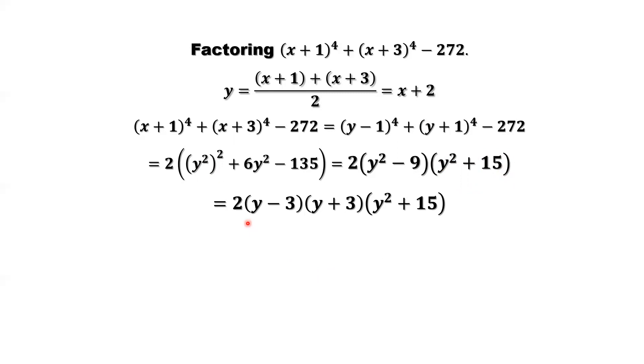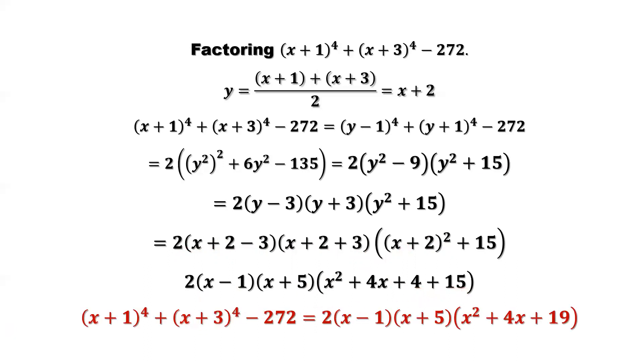So we're here. Looks like we cannot continue to factor this polynomial. So what is y? We know that's x+2. We need to replace y back here in terms of x. So replace y by x+2. x+2, x+2, here (x+2)^2. Continue to simplify. You will see 2-3 is -1. 2+3 is 5. Then here, that's 4+15 is 19. Here should be an equal sign.